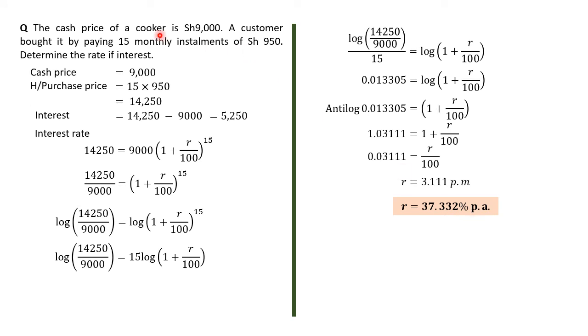And therefore, if the person who was supposed to have bought the cooker by just paying 9,000 and going away with the cooker, pays using 15-month installments of 950, this person is actually paying an interest of 37.332% in a year. And that brings me to the end of the second video on hire purchase.